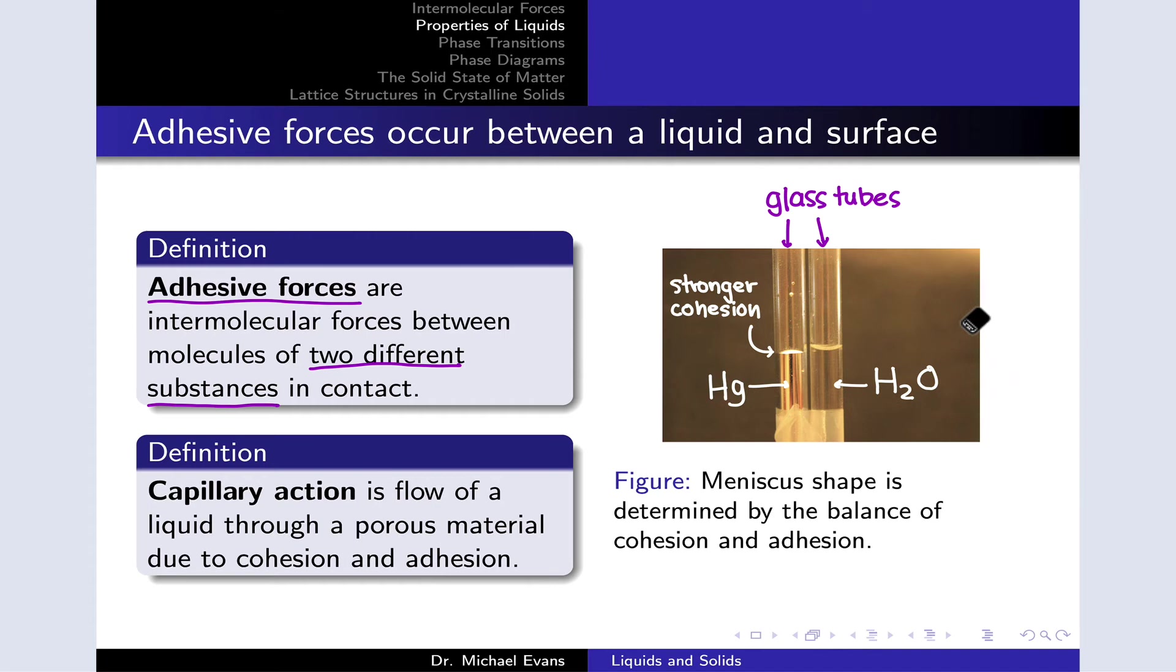Water, on the other hand, being a non-metal having the ability to hydrogen bond with OH groups in the glass, has stronger adhesive forces with the glass than cohesive forces with itself. This causes the meniscus to bulge inward because the water molecules are more strongly bonded to the glass tube walls than to other water molecules, causing the meniscus to bend in like this.